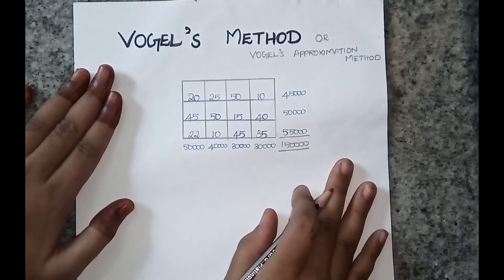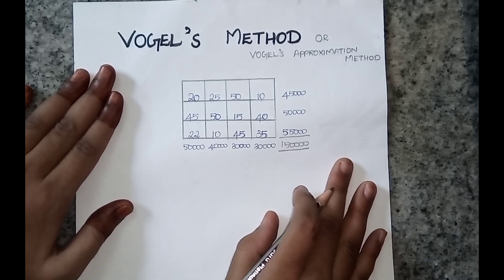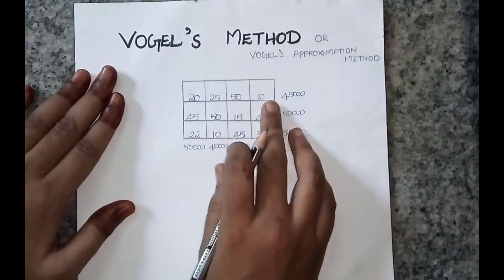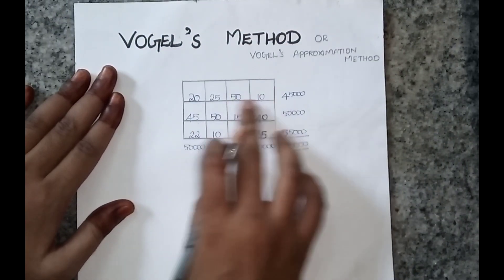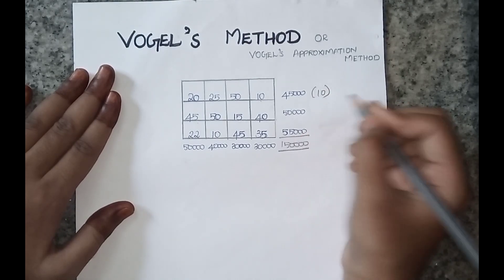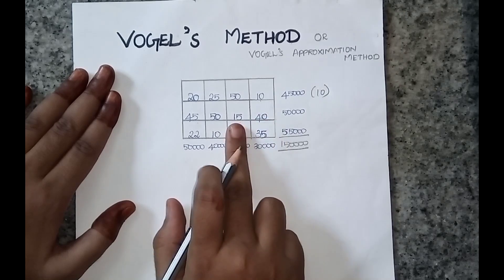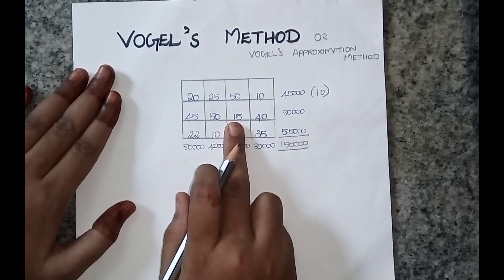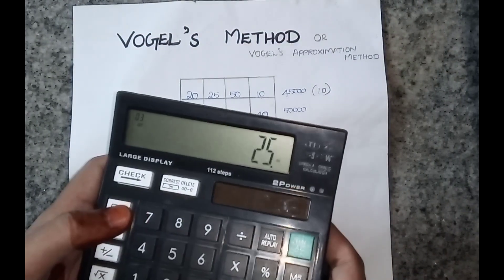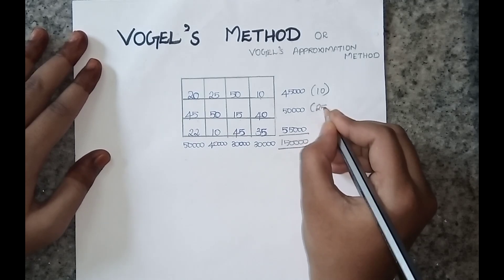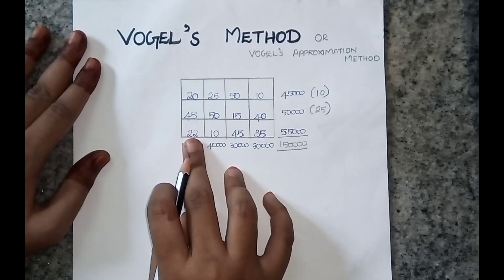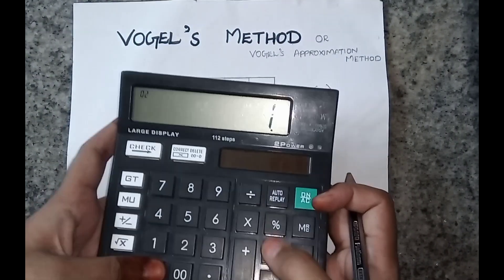Now we can continue with Vogel's method. Step 1: subtract the second smallest number from the first smallest number in each row. In row 1, the smallest is 10 and the second smallest is 20, so 20 minus 10 equals 10. In row 2, the smallest is 15 and the second smallest is 40, so 40 minus 15 equals 25. In row 3, the smallest is 10 and the next smallest is 22, so 22 minus 10 equals 12.